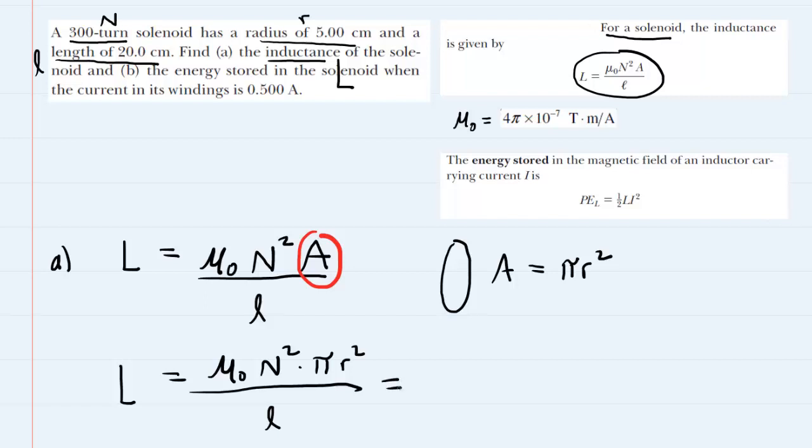At this point we're ready to plug in the known values. The constant mu naught has a value listed over here: 4 pi times 10 to the minus 7 tesla meters per amp. We're going to multiply that by capital N, the number of turns, which was 300. Don't forget to square that value.